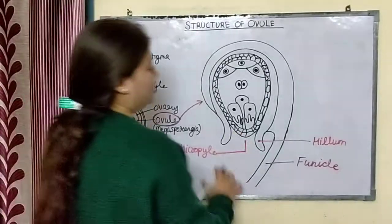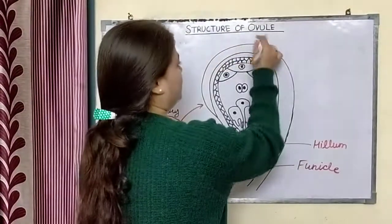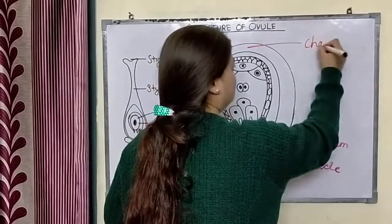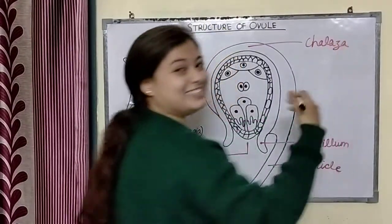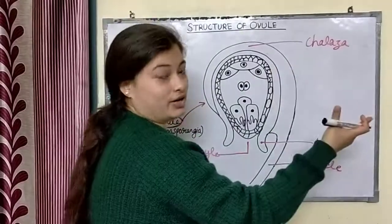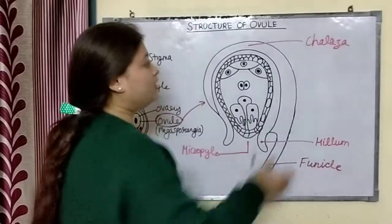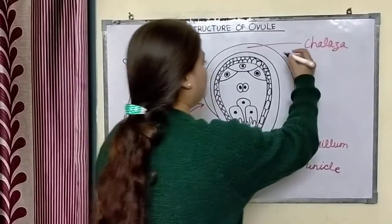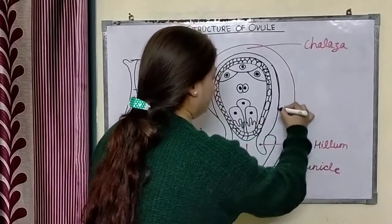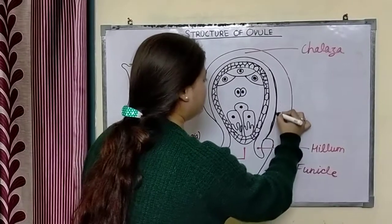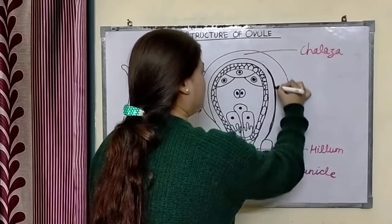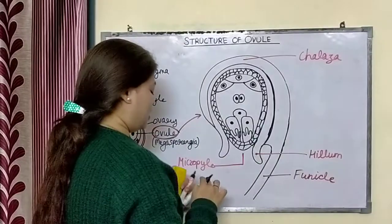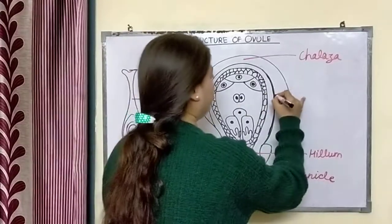It is called micropyle end or micropyle opening — both terms are used. Now, the upper fleshy part is called chalaza. Then, these little fleshy structures connected here form a slightly darker region. This structure is called the integument.